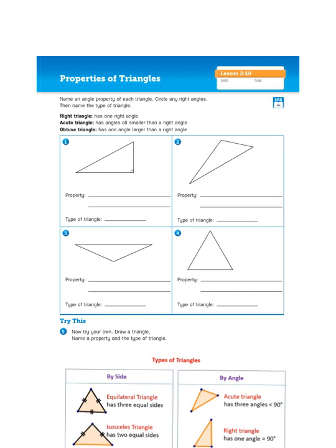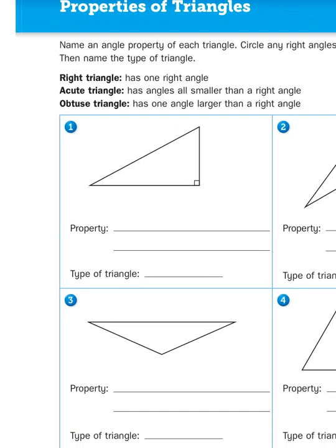So let's take a look at these four pictures. It says name an angle property of each triangle, circle any right angles, and then name the type of triangle. So if I look at number one, I can see right away there is a right angle.